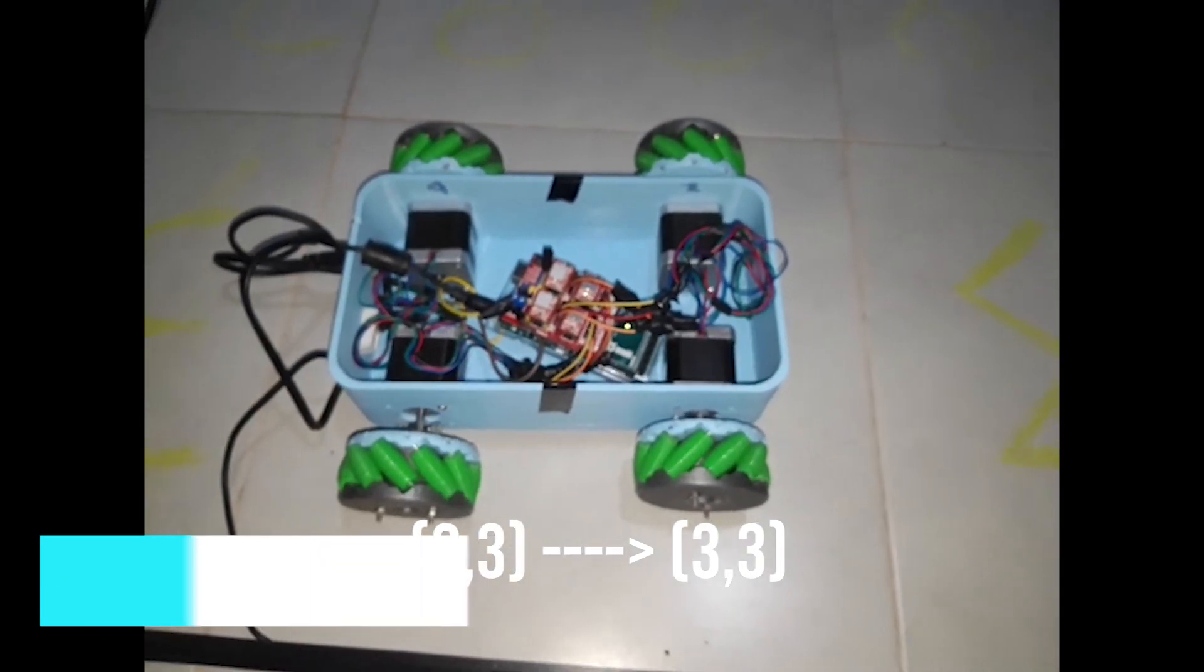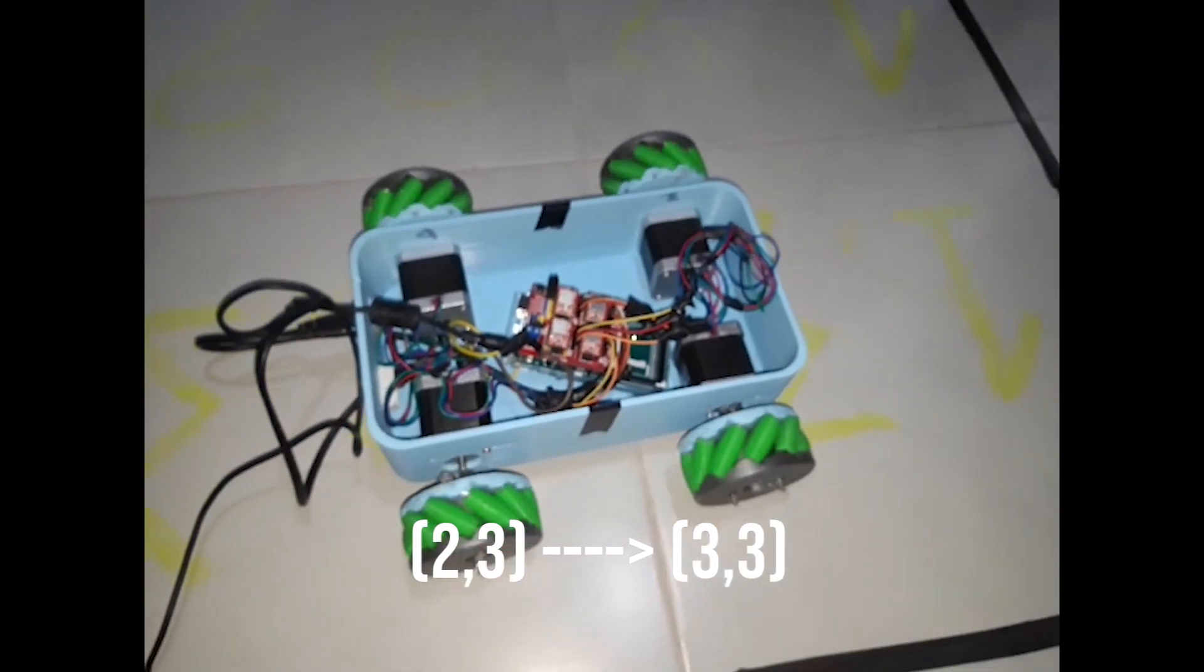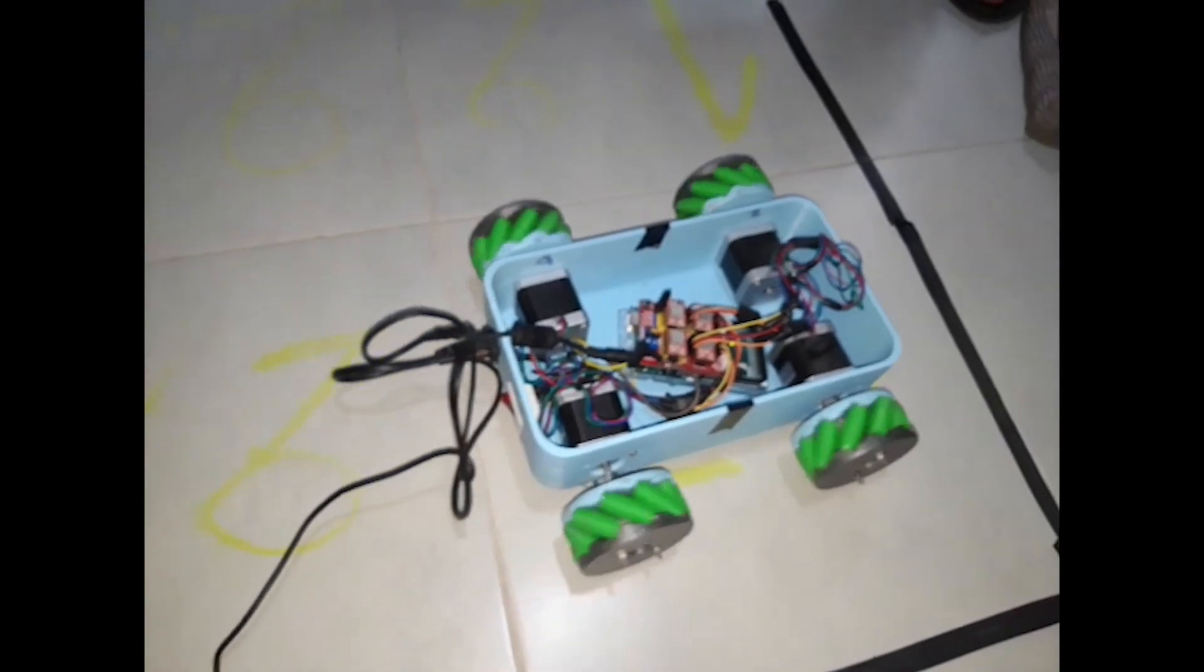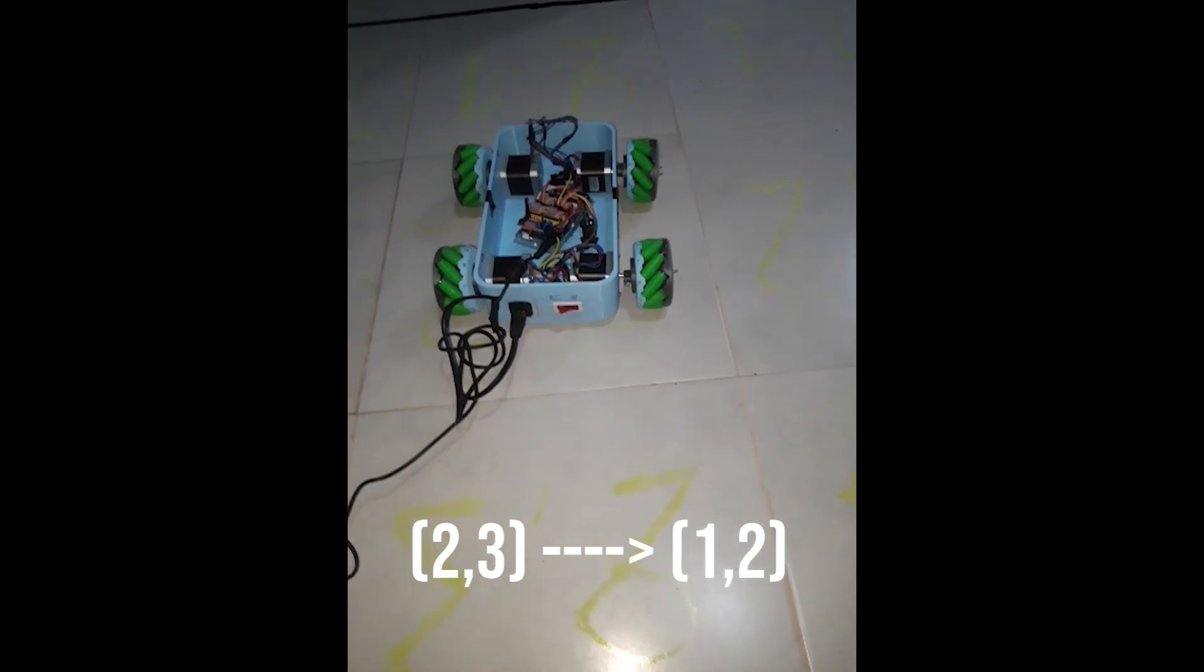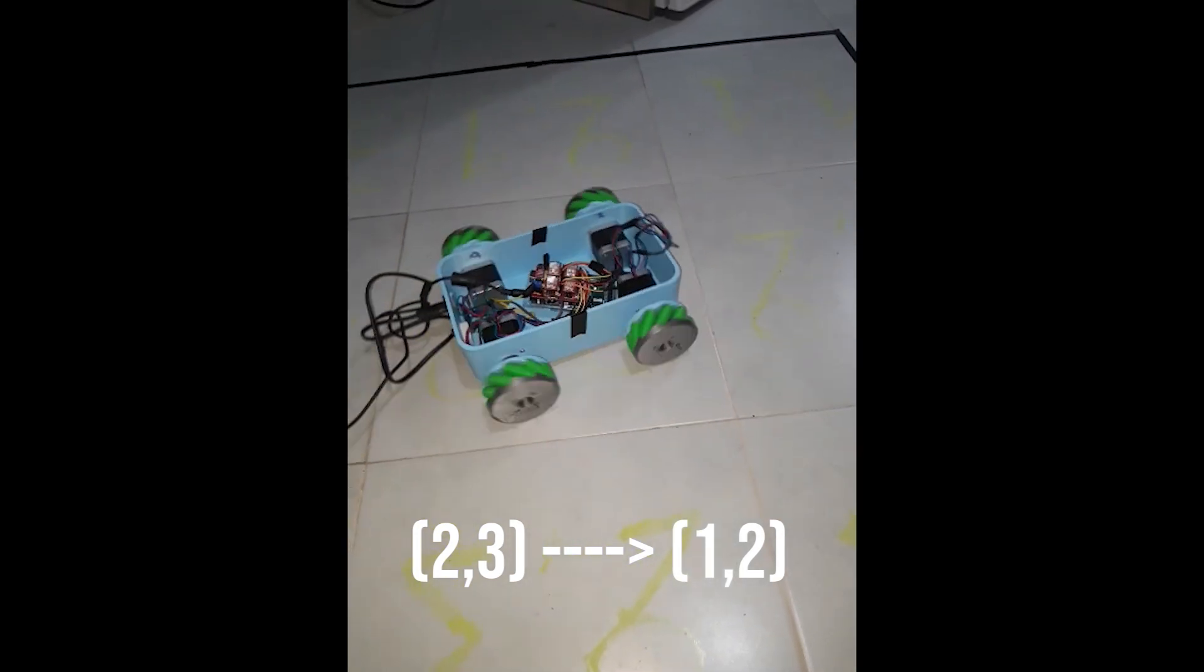This robot is equipped with advanced algorithms to plan the most efficient routes to reach its destination. The main feature of Roverbot is its ability to move in all directions, thanks to its mecanum wheels that allow it to maneuver precisely in tight spaces.